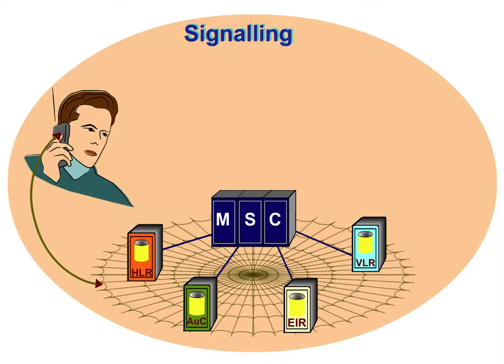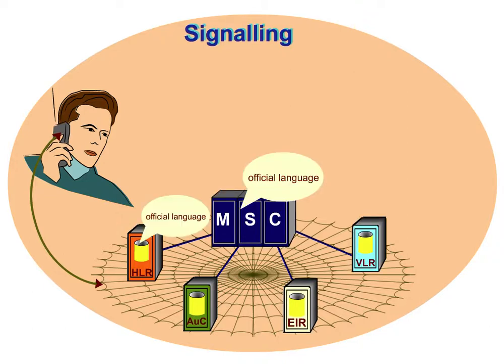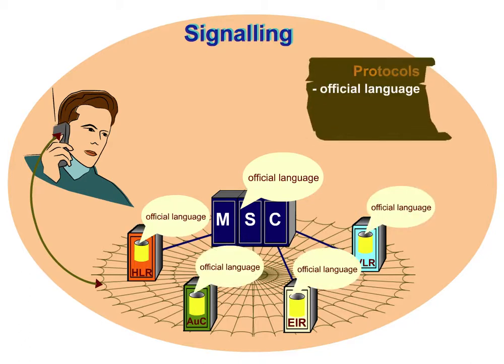To make sure that the individual elements through which the information travels can understand each other, they must, as it were, agree on a common official language. This language is specified by protocols.